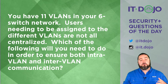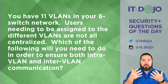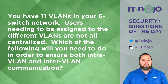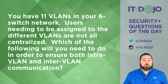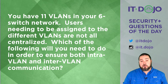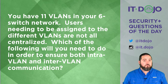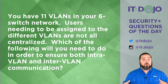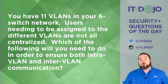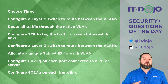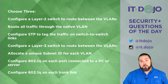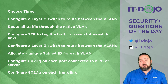Let's look at question number two. You've got a network with 11 VLANs and six physical switches, and not all users are centrally located — users who need to be in a particular VLAN are spread out across different switches. You need to allow for intra-VLAN communication and inter-VLAN routing. Given the list of choices, which three need to be in place to support both inter- and intra-VLAN communication? Click pause, give it some thought, then we'll break it down.